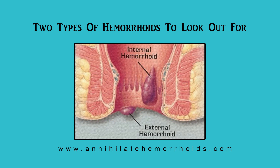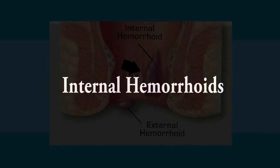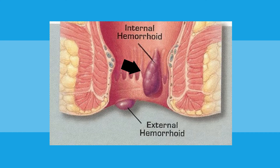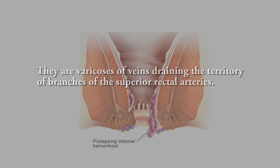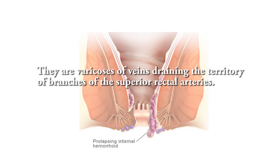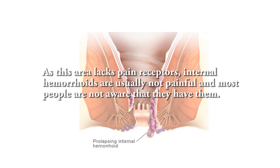Let's get to the two types of hemorrhoids. First, we'll start with the internal hemorrhoids. Internal hemorrhoids are those that occur above the dentate line. Specifically, they are varicose veins draining the territory of branches of the superior rectal arteries. As this area lacks pain receptors, internal hemorrhoids are usually not painful and most people are not aware they even have them.